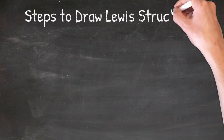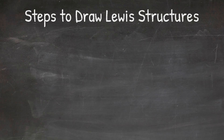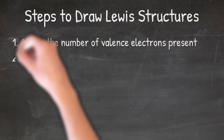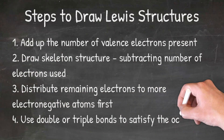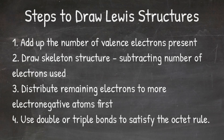When it comes to drawing Lewis structures, there are four easy steps to follow. Number one is to add up the number of valence electrons present. Number two is to draw the skeleton structure, and make sure to subtract the number of electrons that you used. Number three is to distribute the remaining electrons to the more electronegative atoms first. And number four is to use double or triple bonds to satisfy the octet rule. Now we're not always going to use rule number four — that's only going to be used when necessary.